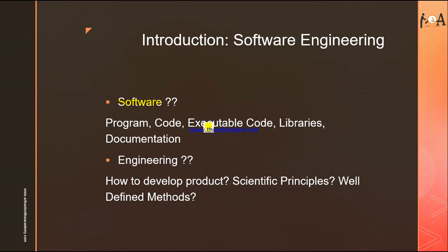We can also say that software is a combination of programs, documents, plus operating procedures. If any new person wants to operate that software, they should know what the documentation is all about and how it operates. So software is basically a program, or a combination of source code and object code, consisting of several programs with its documentation, executable code files, and libraries.